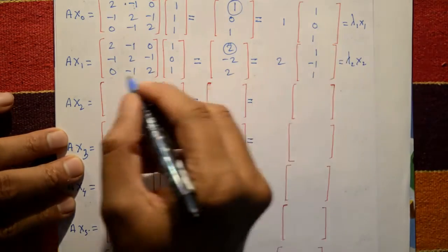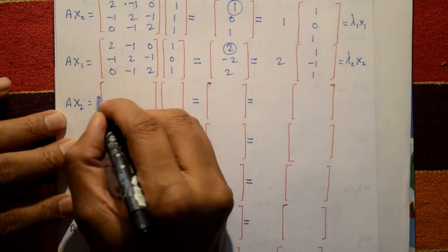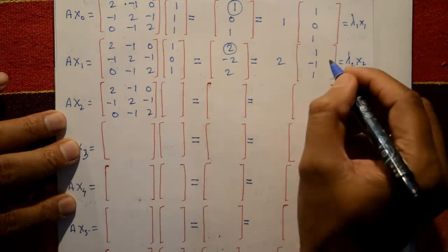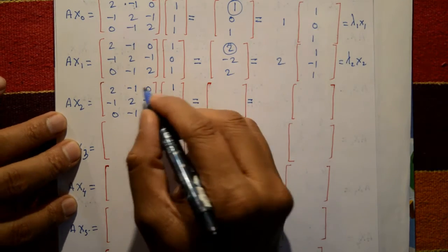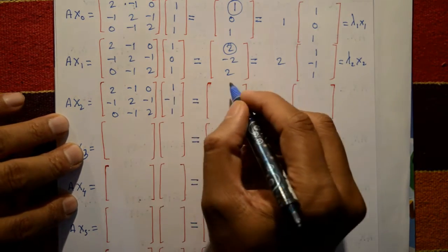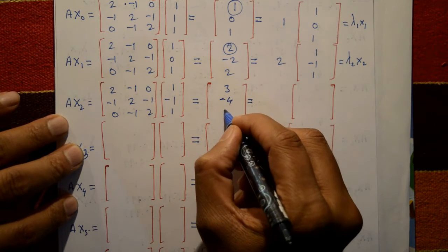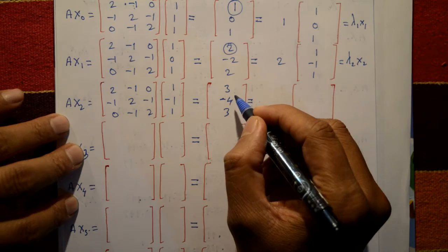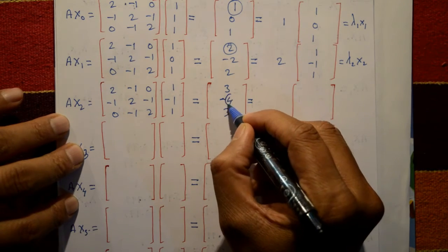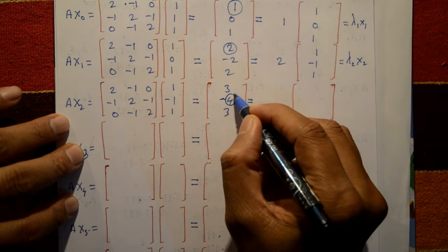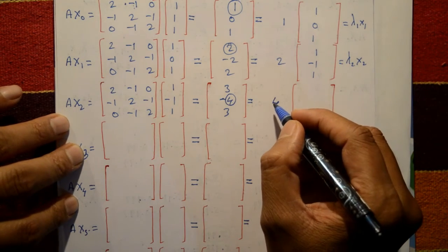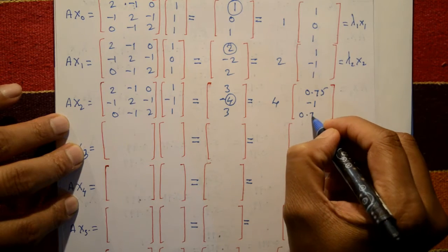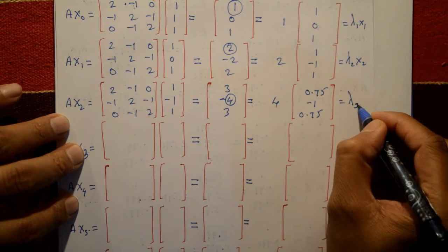Third iteration: A × x2 with x2 = [1, -1, 1]ᵀ. Matrix multiplication gives [3, -4, 3]. The numerically largest element is 4 (take 4 outside, not -4). This gives λ₃ = 4 and x3 = [0.75, -1, 0.75].